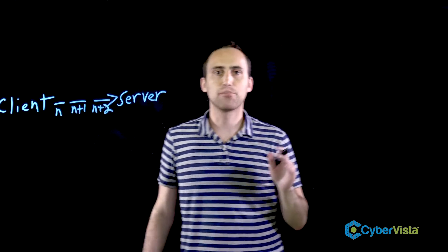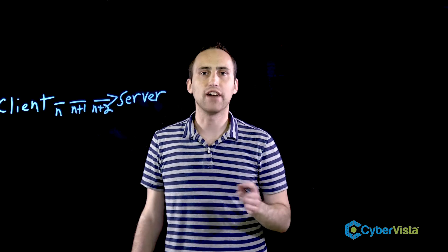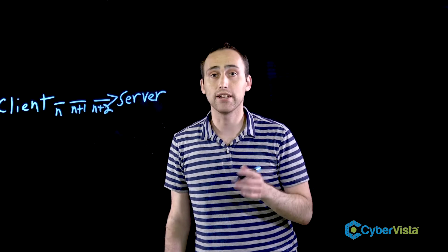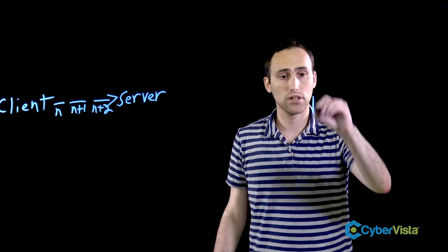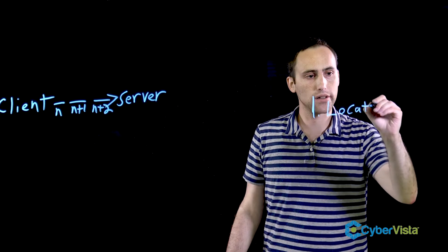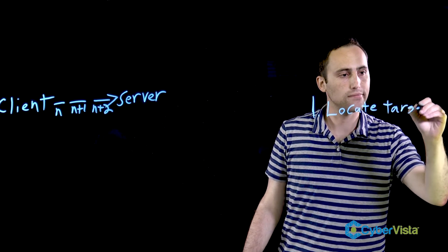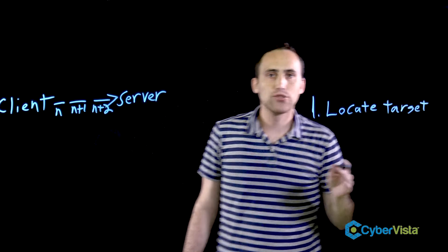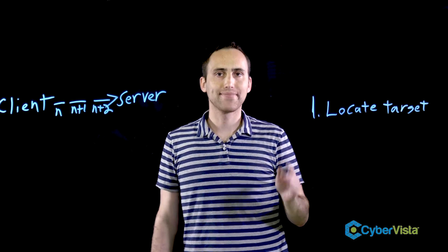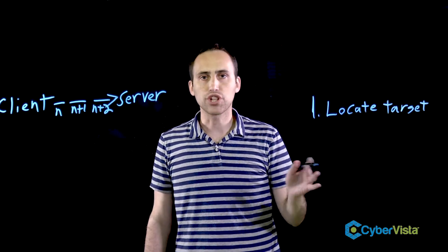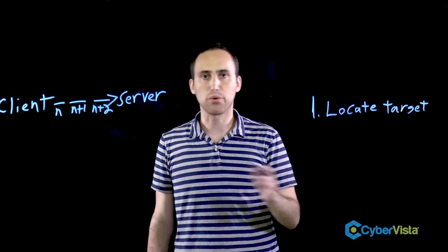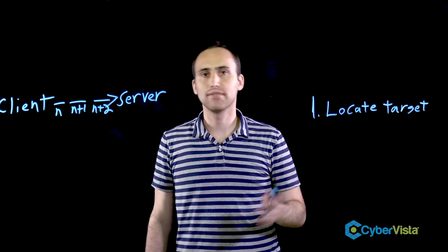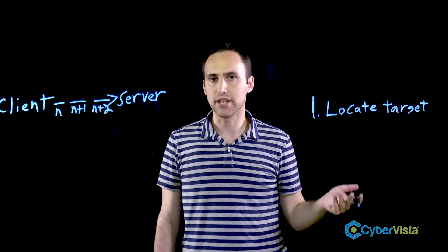A sequence number prediction attack typically occurs in five steps. First, an attacker has to locate a target. When choosing a target, hackers generally look for two things: high-volume networks, which help the attacker remain anonymous, and insecure network protocols, such as Telnet or FTP.